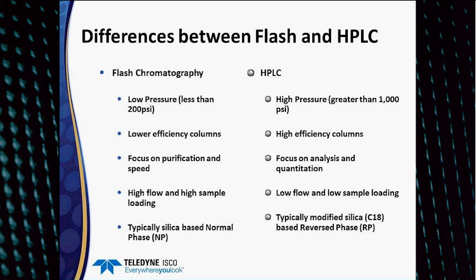HPLC is probably 90% done using modified silica such as C18, making it predominantly a reverse phase technique today. Although HPLC can be used in normal phase, and flash can be used in reverse phase mode using C18 or other bonded silica columns, the typical applications are flash as normal phase and HPLC as reverse phase.